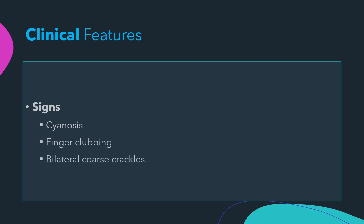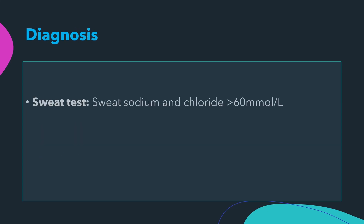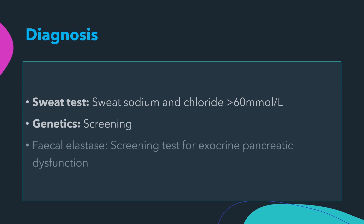Signs may include finger clubbing, cyanosis, and bilateral coarse crackles. Diagnosis is made with a sweat test — sweat sodium and chloride greater than 60 mmol/L is diagnostic. Gene testing should also be done, and screening for non-common cystic fibrosis mutations should be considered. Fecal elastase is a simple and useful screening test for exocrine pancreatic dysfunction.